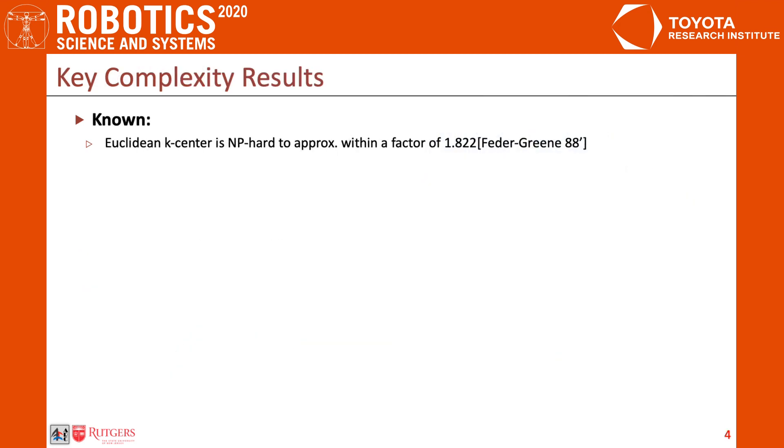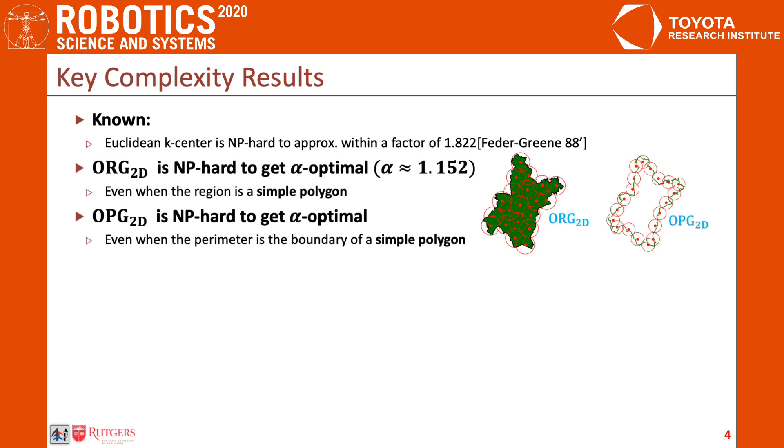One of the two main contributions of our work is on the computational complexity analysis of the problems investigated. We know that for the Euclidean K-center problem, it is NP-hard to approximate the optimal coverage radius within a factor of 1.822. We show that for ORG and OPG on a simple polygon, it is also NP-hard to solve it optimally, even to approximate it within a factor of around 1.152.